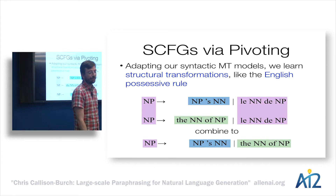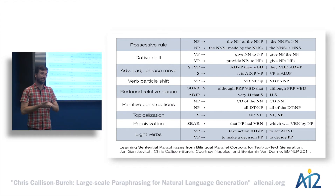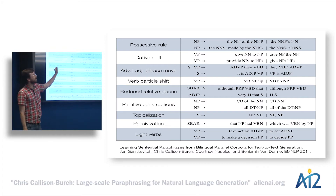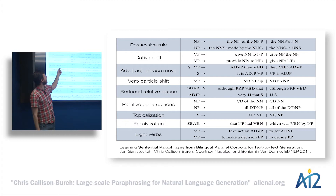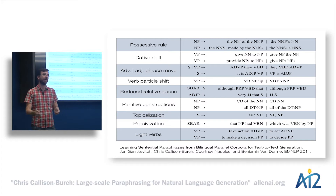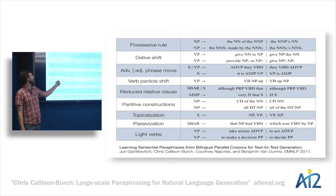In our EMNLP paper, we examined the syntactic transformations learned in this fashion to find instances of English meaning-preserving syntactic transformations. We found a lot of interesting ones: various instantiations of the possessive rule, the dative shift — 'give Peter the book' or 'give the book to Peter,' adjectival and adverbial phrases that move around, and verb particle expressions where you can move the particle — 'knock the mug over' versus 'knock over the mug.' We also found reduced relatives, partitives, topicalization, and passive constructions.